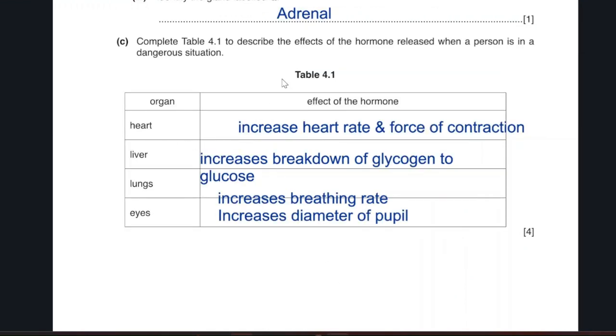The adrenaline for the heart increases heart rate and force of contraction. For the liver increases the breakdown of glycogen to glucose. For the lungs increases breathing rate and depth of breathing. For the eye increases the diameter of the pupil.